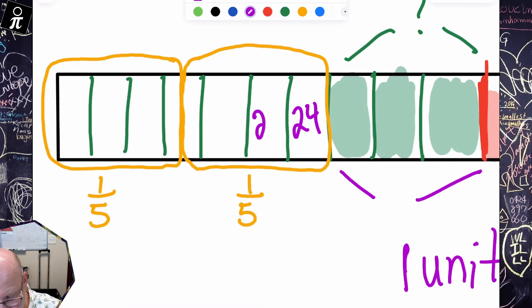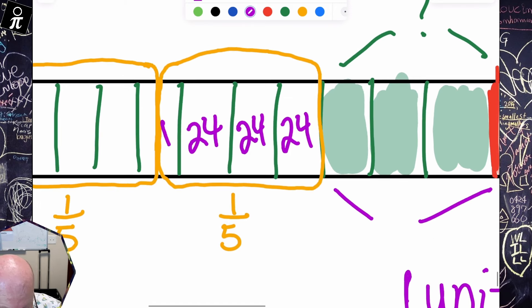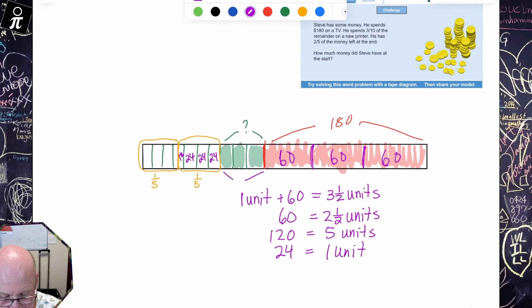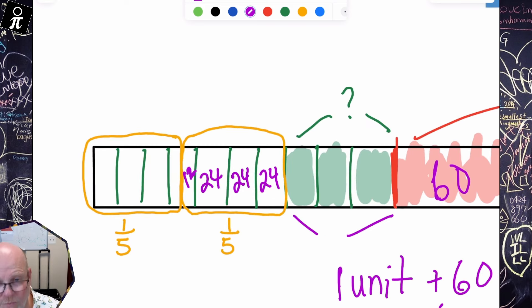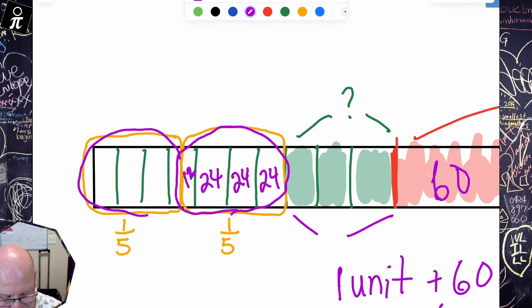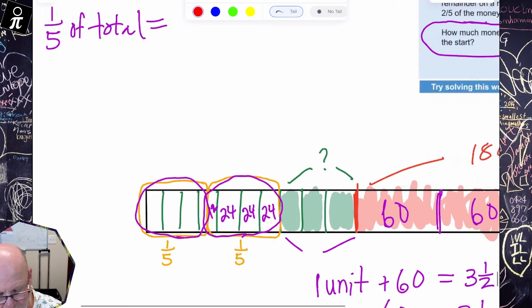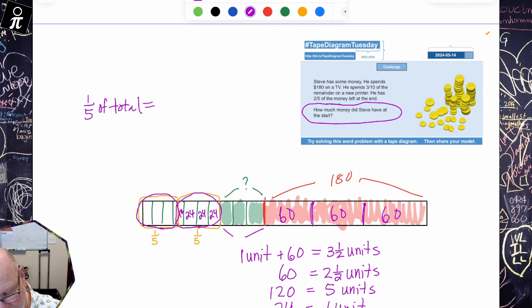So now I know that one tiny little unit right here is 24. So that unit right there is 24, that unit is 24, that unit is 24. So that means that half a unit is actually 12. And it's asking us how much did Steve have at the start. Well, if one fifth of the total is 24 plus 24 plus 24 plus 12 right here, that's one fifth. And I don't know why I chose that one. I could have chosen this one. But anyway, so I got to add these numbers up. So 10, 20, 30, 40, 50, 60, 70, 80, 84.